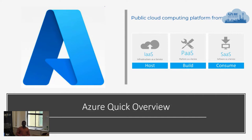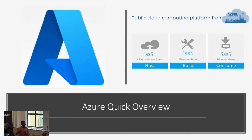PaaS, or platform as a service, is where you start building your application, but the baseline things like infrastructure, network, and platform are set up for you by Microsoft, and you concentrate on your development and deployment. Then we have SaaS, or software as a service. We knowingly or unknowingly use SaaS in our day-to-day life — for example, Microsoft Teams or Microsoft Word as part of your Office 365 subscription. You're using a product that's run by Microsoft — that's where software as a service comes in.